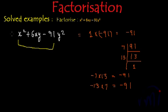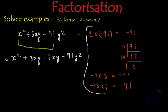So now I will write this 6xy as 13xy minus 7xy. So this expression can be written as x square plus 13xy minus 7xy minus 91y square, right? This was our rough work.